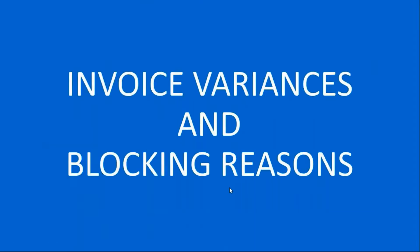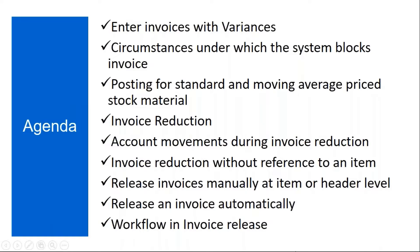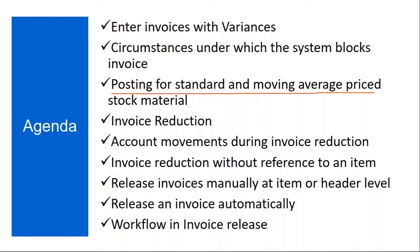The topics we are going to cover: how to enter invoices with variances, circumstances under which the system blocks the invoice, posting for standard and moving average price to stock material. Then we will see invoice reduction, account movements during invoice reduction, invoice reduction without reference to an item. Then releasing invoices manually at item level or header level, releasing an invoice automatically, and the workflow in an invoice release.